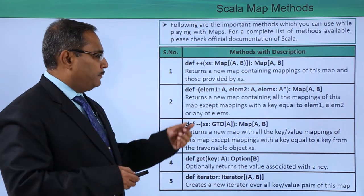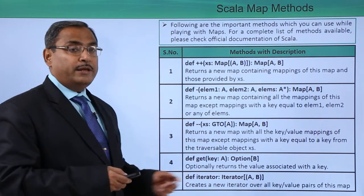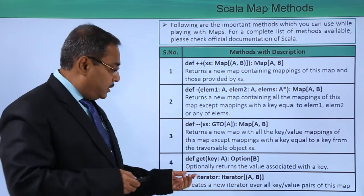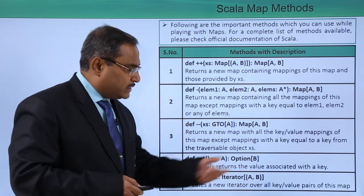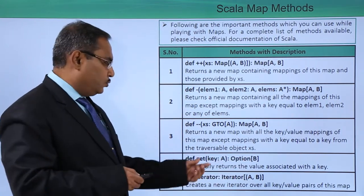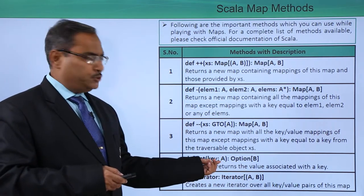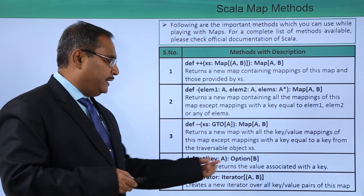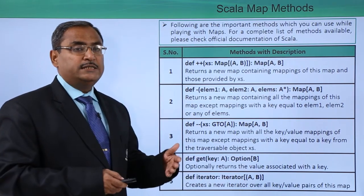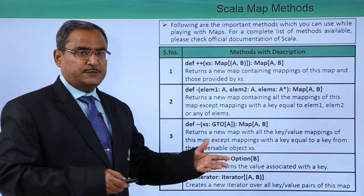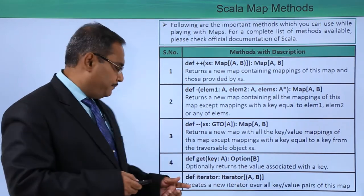We are also having the -- method for removal. We are having the method get, which optionally returns the value associated with a key. The key will be passed as input of type Any, and then it returns Option[B]. That means if the key is found successfully, the respective value will be returned; otherwise it will return None.